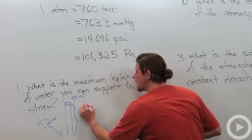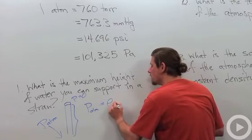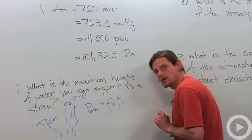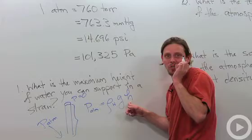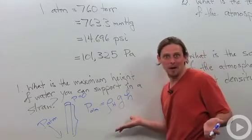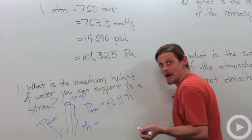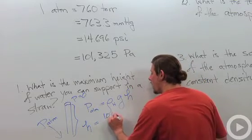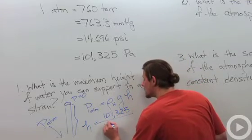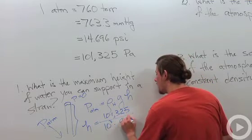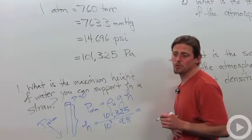So what we're going to do is we're going to say P atmospheric equals density of water times acceleration due to gravity times the height, and that's that height that we're after. Well now it's just real easy. I just got to solve and plug in numbers. As long as everything's in SI units, I'm good to go. So H will be P atmosphere 101,325 over density of water 10 to the third, G 9.8, and when you work all that out you'll find that it's about 10.34.